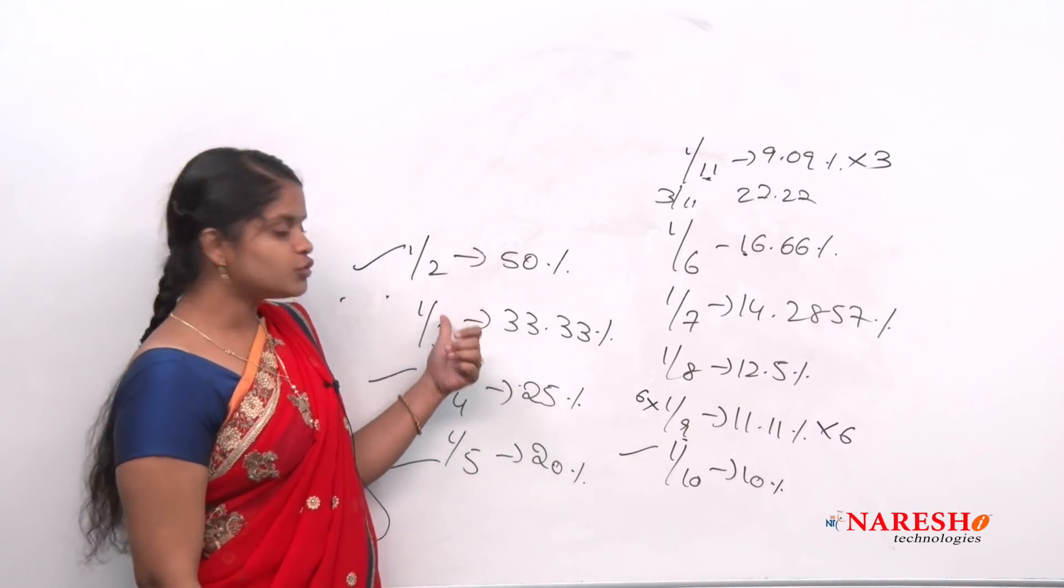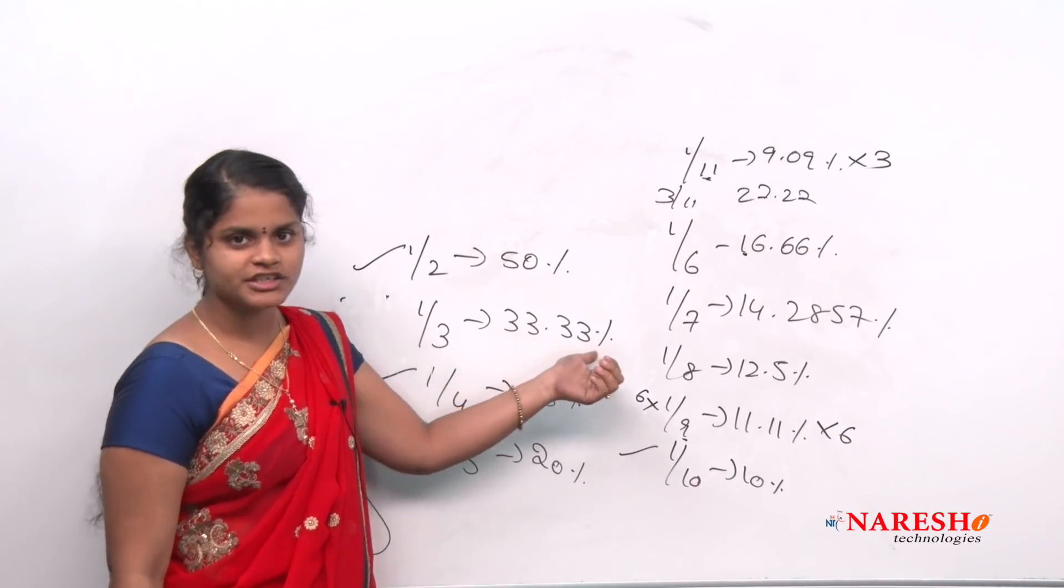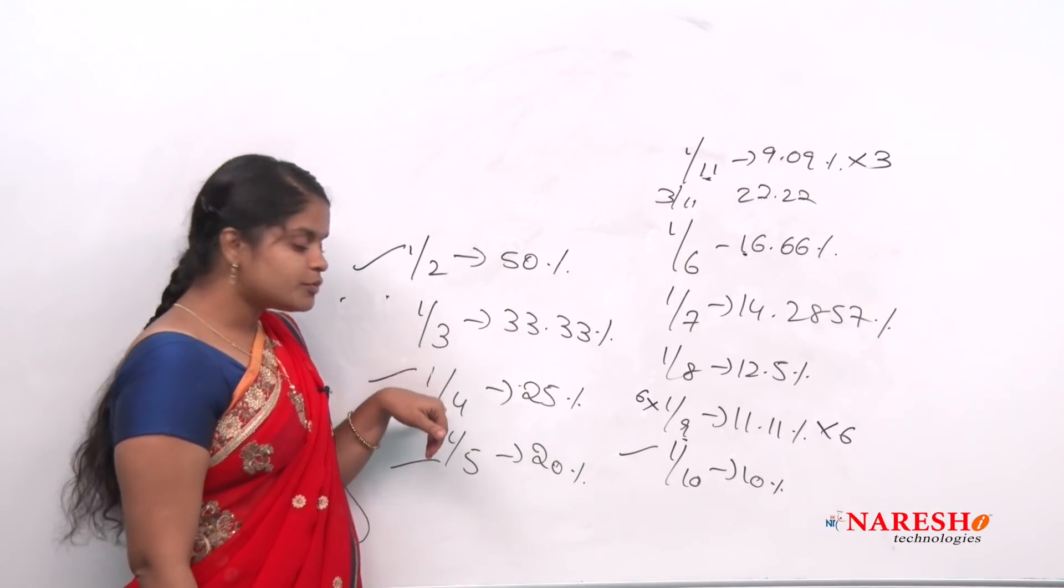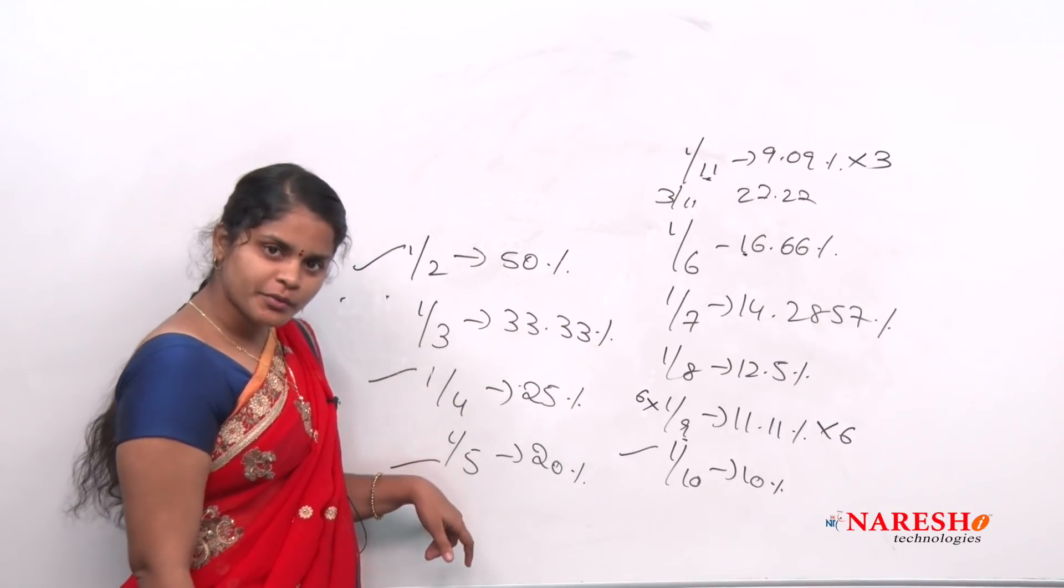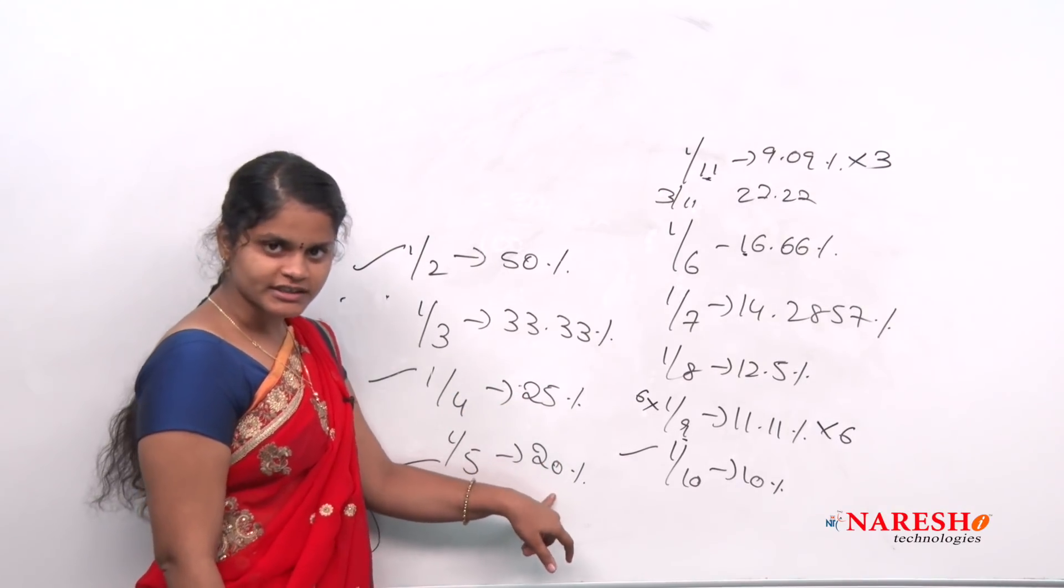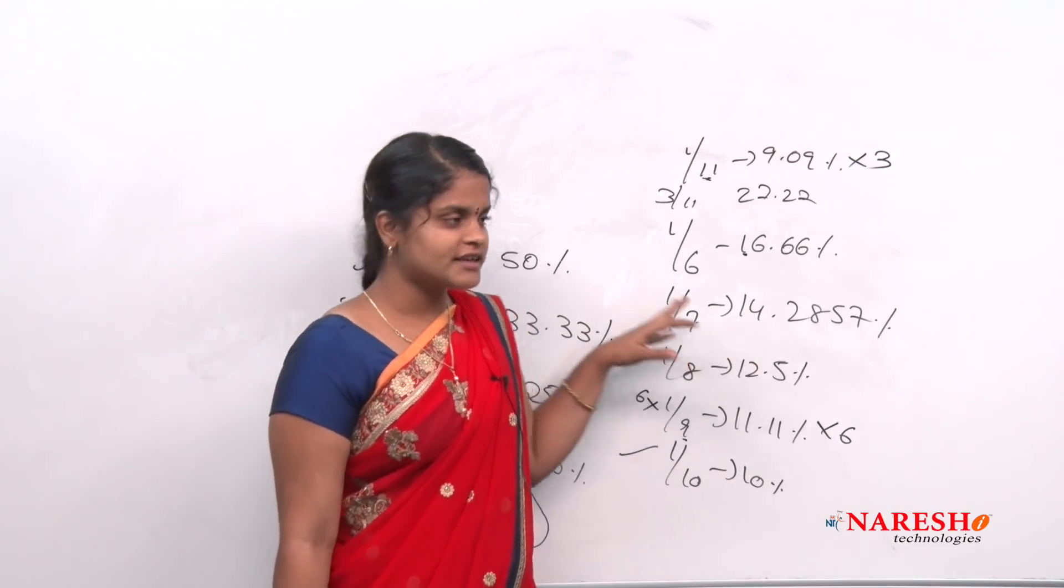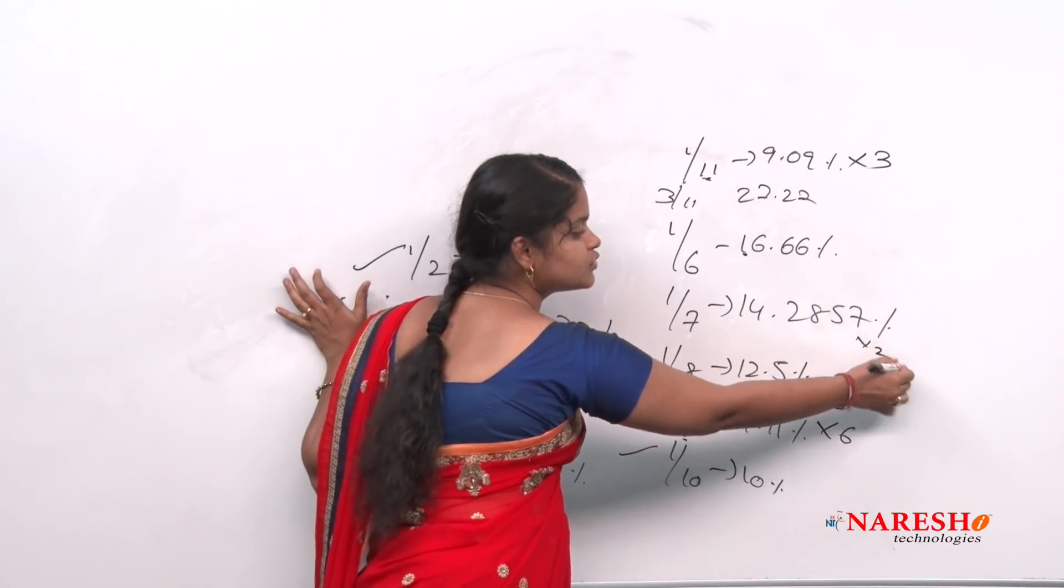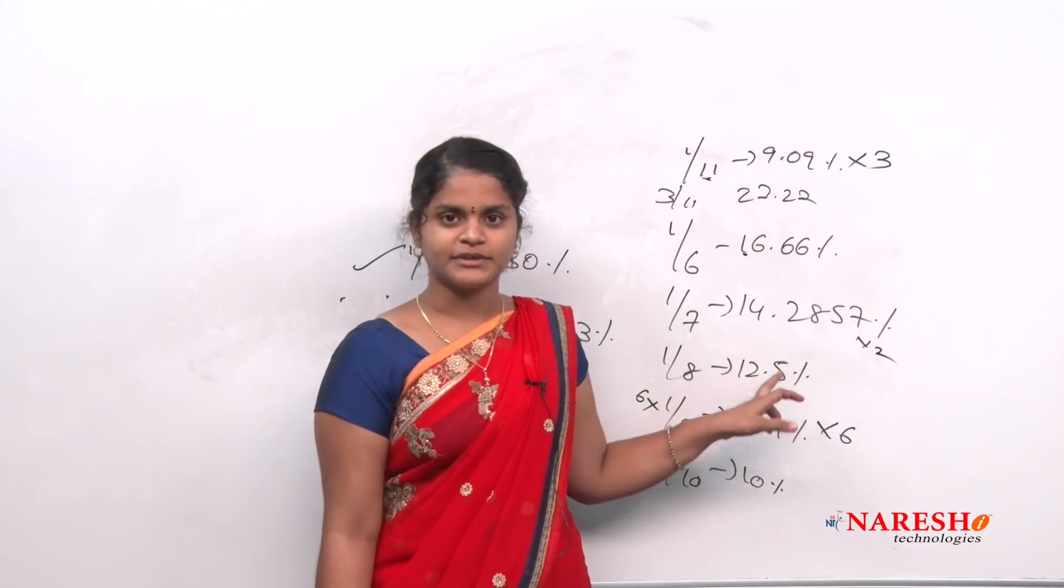If I want to find 2/3, what can I do? Just into 2. That is very easy. 33.33 into 2 will give me 66.66. If I want to find 2/4, it is also very easy, just into 2. If I want to find 2/5 also just into 2, 40 percent. But see here 7, if I want to find 2/7 means what I should do? 14.2857 into 2. Is that so easy? No, right? Actually 7 is a magical number. Let me explain you what is that.